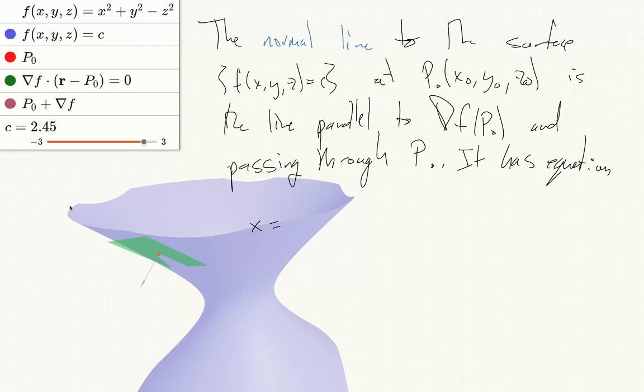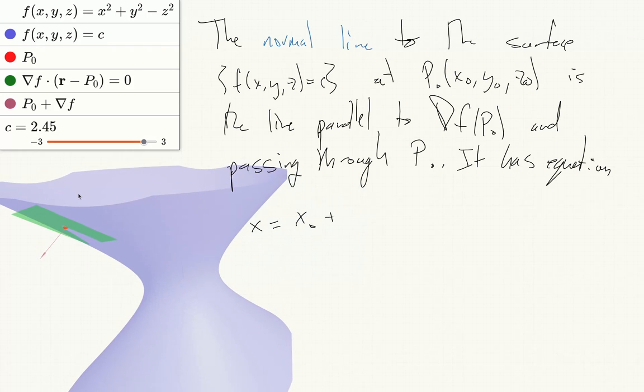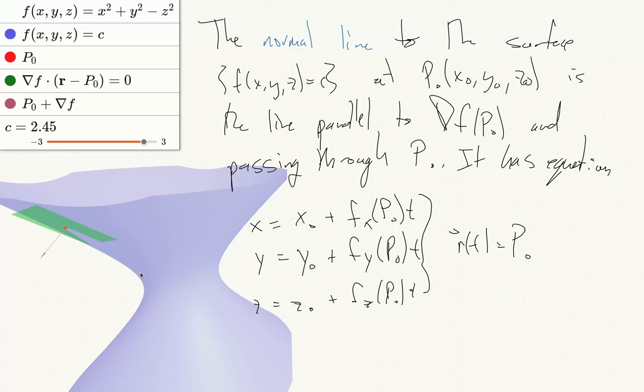And so this will have equation x equals x0 plus f_x(p0) t, y equals y0 plus f_y(p0) t, z equals z0 plus f_z(p0) t, or more concisely r(t) equals p0 plus del f at p0 times t, where this part is a vector and this is a scalar.